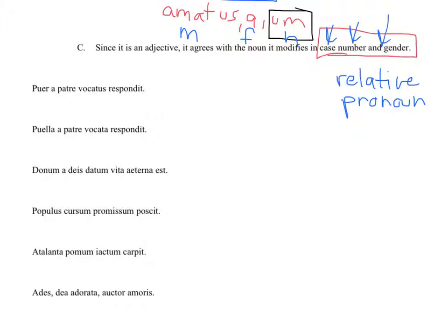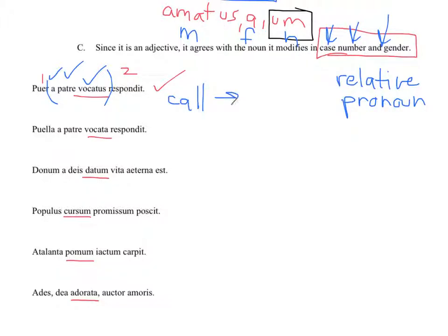Here are some examples of sentences using the participle perfect passive. I'll underline the participle perfect passive in each case so you can see that these words are being changed into different cases and endings, and that they modify the nouns they describe, agreeing with them in case, number, and gender. The first sentence says: the boy responded, called by the father. The boy responded — and this is almost like its own little clause — called by the father. Called is from the verb call, and you can translate it as called or having been called. The boy, having been called by his father, responded.